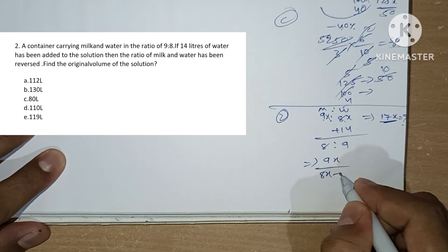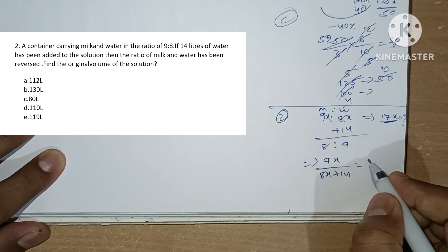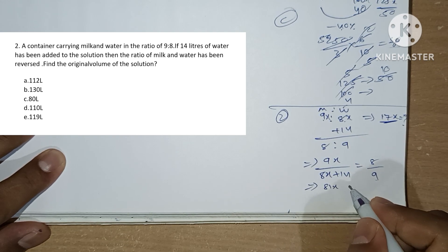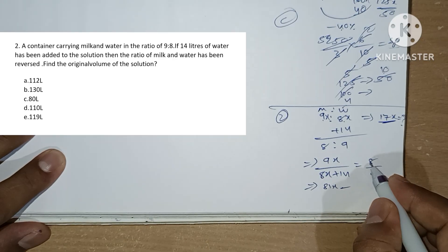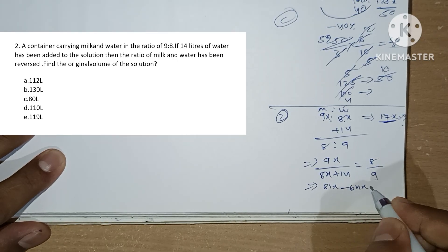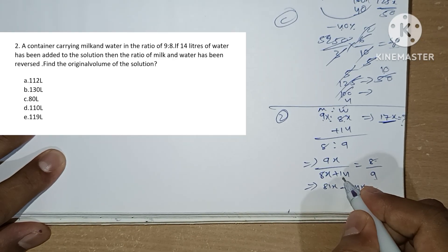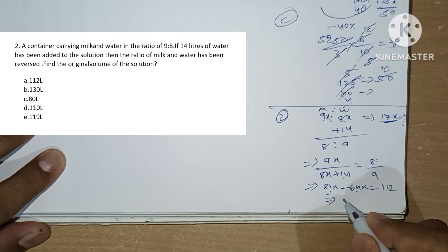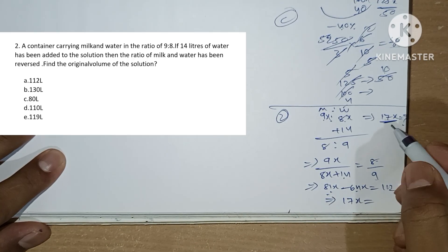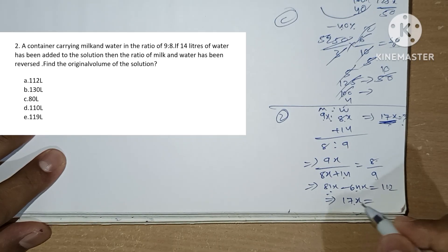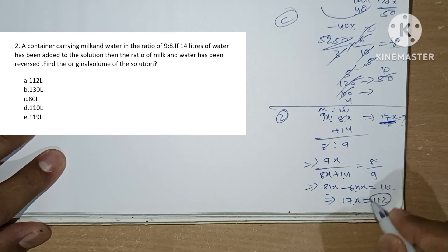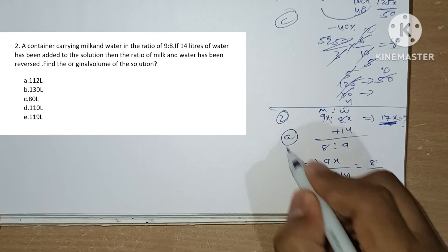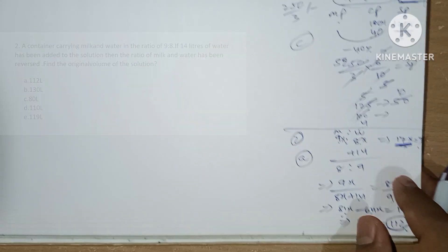Setting up the equation: 9x divided by (8x + 14) equals 8/9. Solving gives 81x minus 64x equals 112, so 17x equals 112. The original volume of the solution is 112 liters. Option A is our answer.